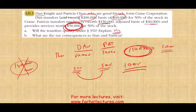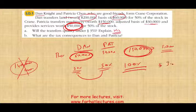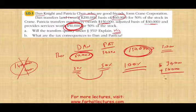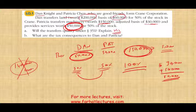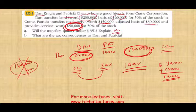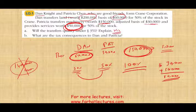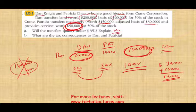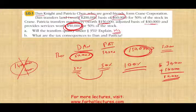Regarding basis: Dan will have a basis of $60,000 in the stock. Patricia will have a basis of $30,000 for the machinery plus $50,000 for the services, giving her a stock basis of $80,000. The next topic we'll cover is the assumption of liabilities, and we'll also discuss basis to the shareholder and basis to the corporation, which is important for when you eventually sell or dispose of the stock.